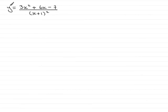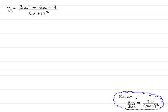Now in this question we're given that y equals 3x squared plus 6x minus 7 all over x plus 1 squared, and we're asked to show that dy dx is equal to 20 over x plus 1 all cubed.